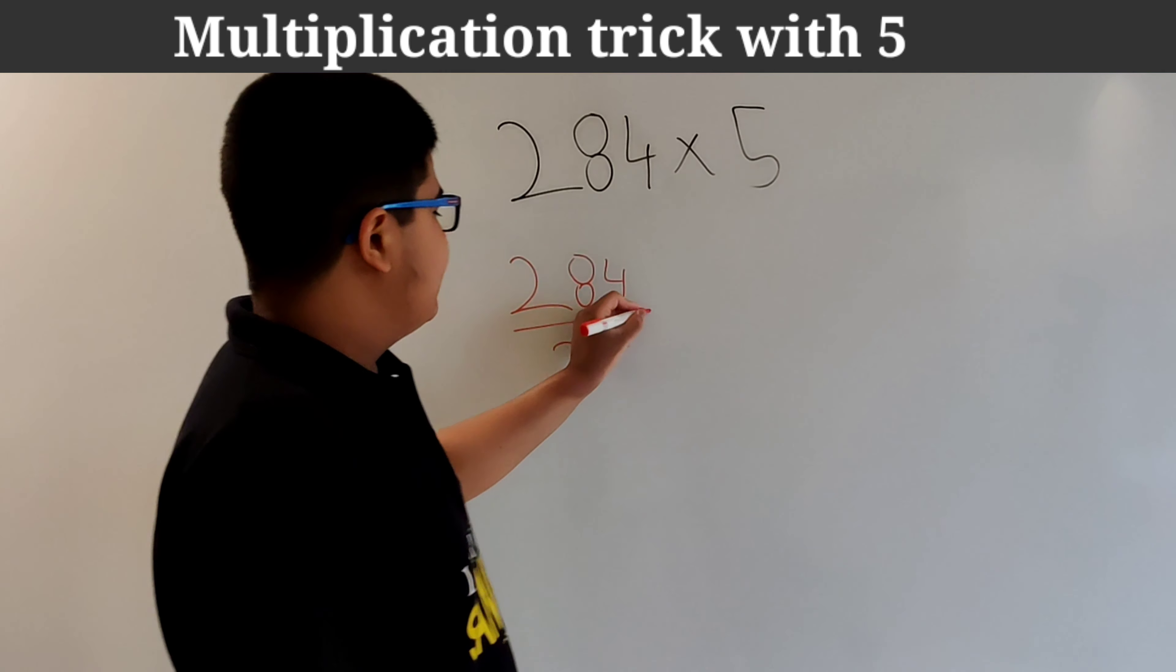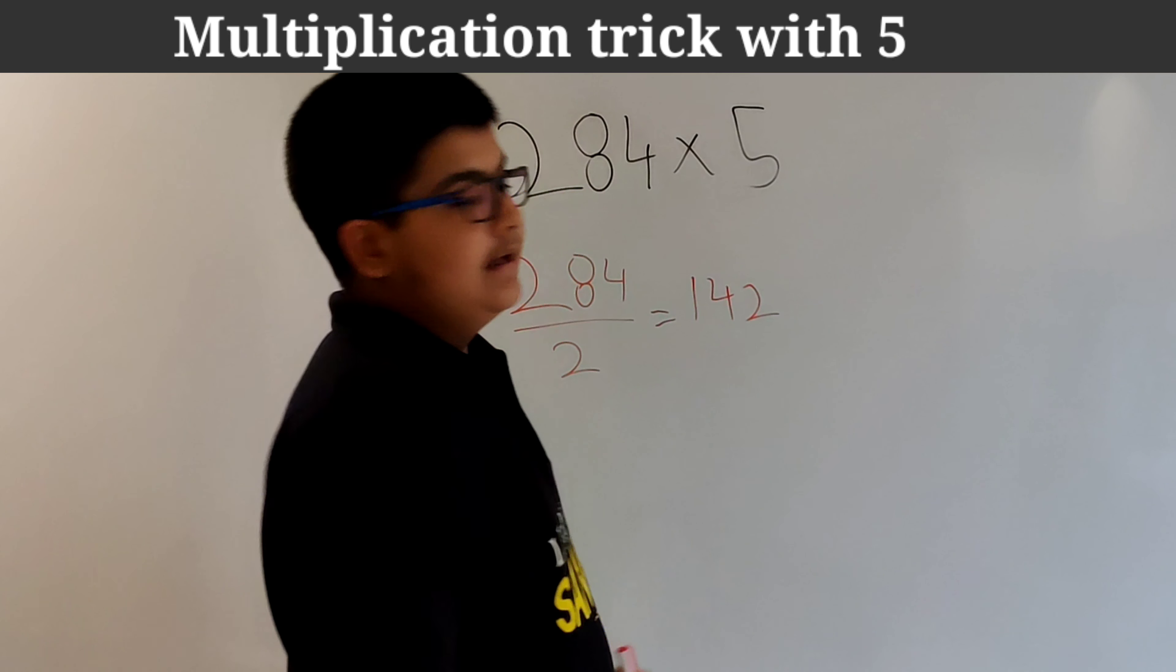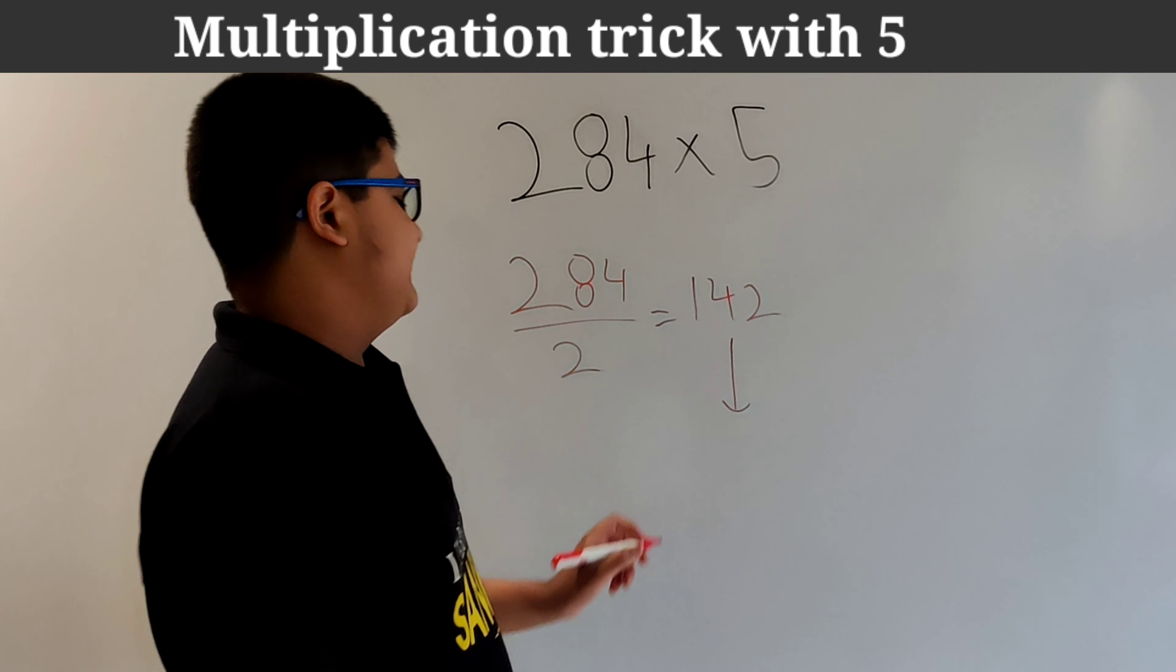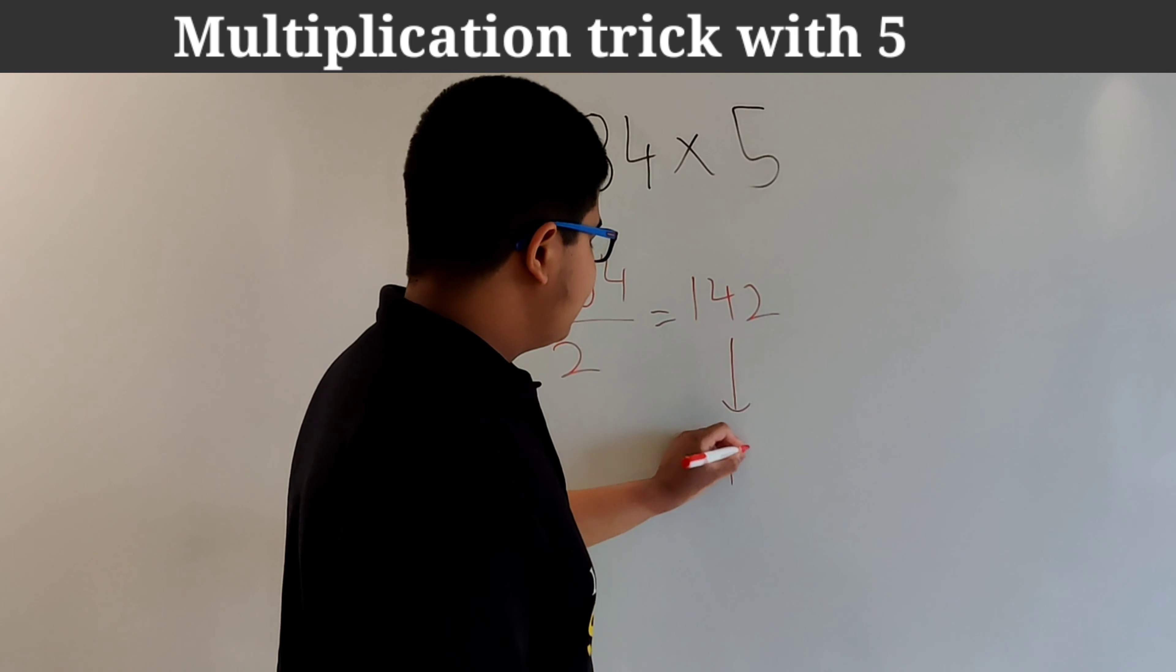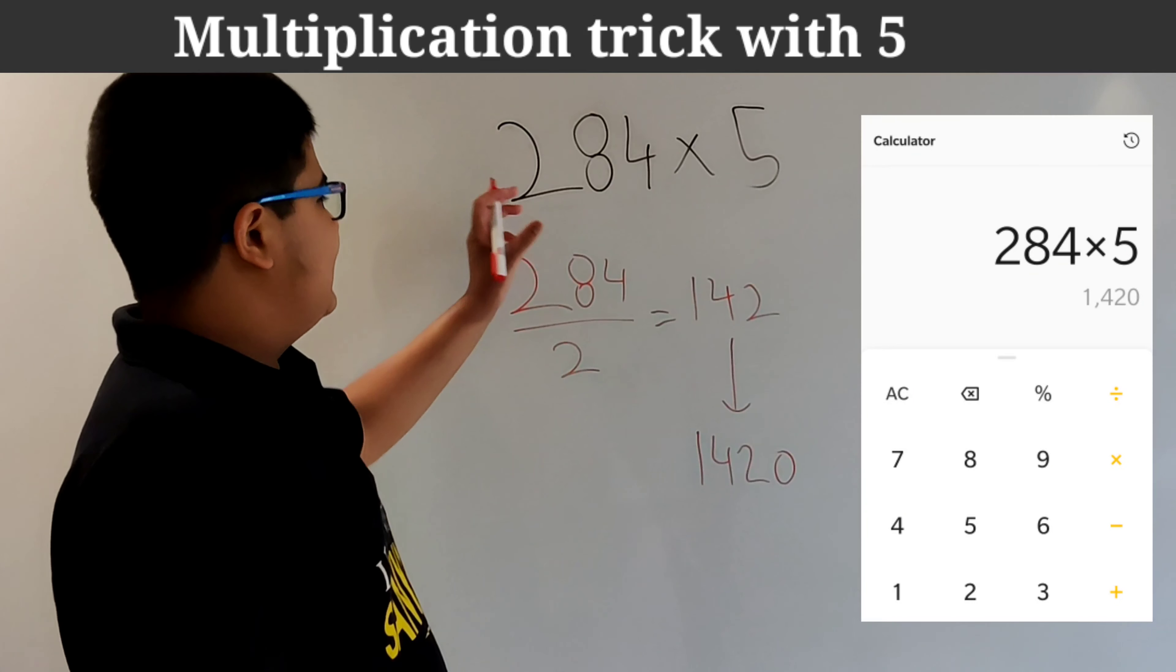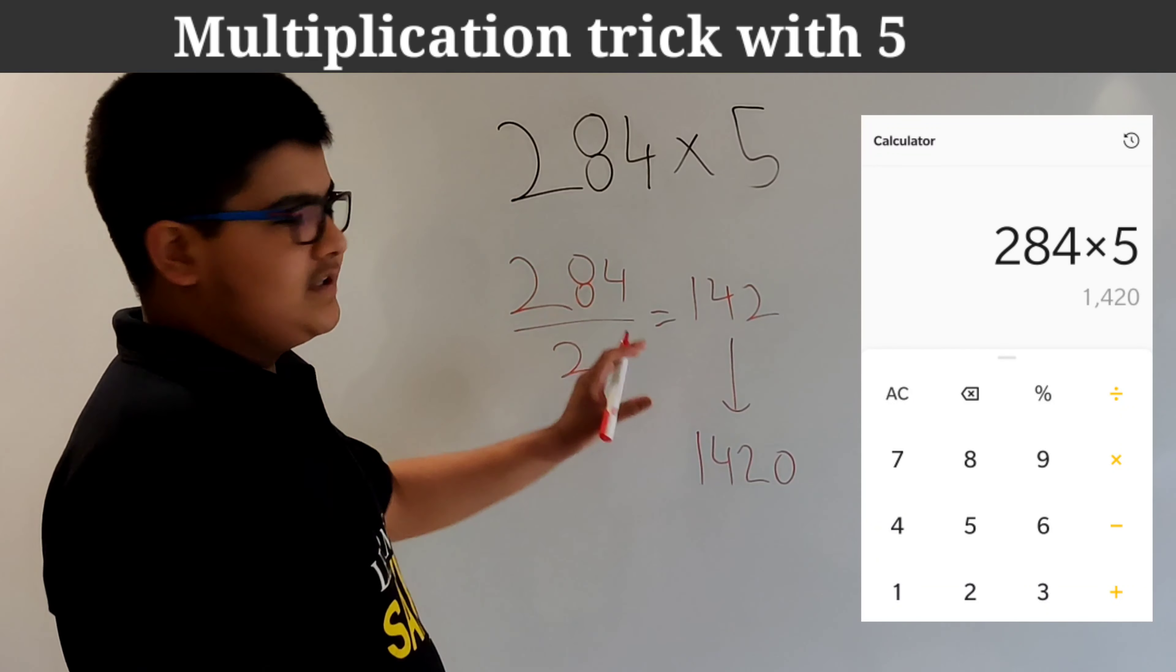Now this will give us 142. Now in step 2 what you have to do is just put a 0 behind this number. So your answer will become 1420. So just divide the number by 2 and put a 0 in the end.